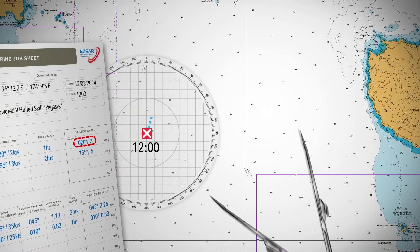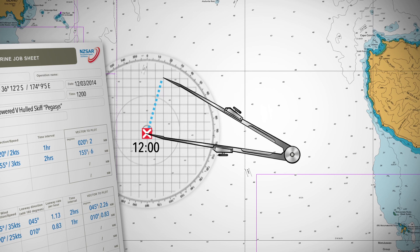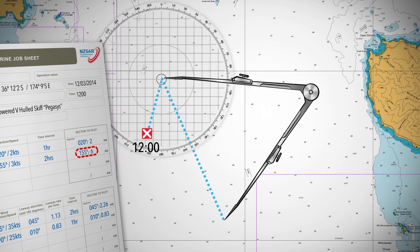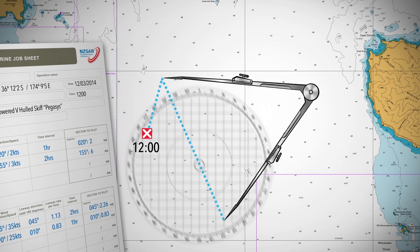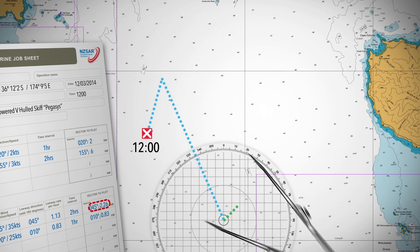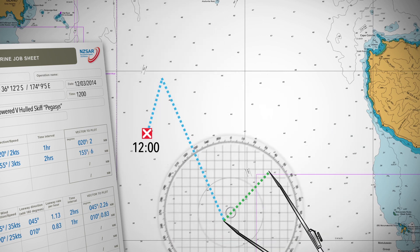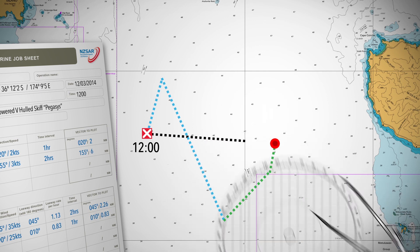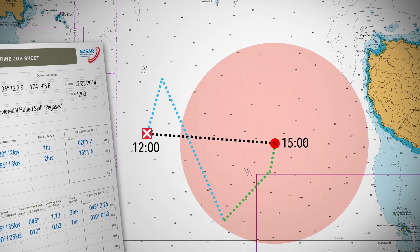We can now plot these lines together to arrive at our datum and search area. Remember, if the total drift line is greater than 8 nautical miles, the line will need to be divided by 8, and the result added to the standard 6 nautical miles search radius.